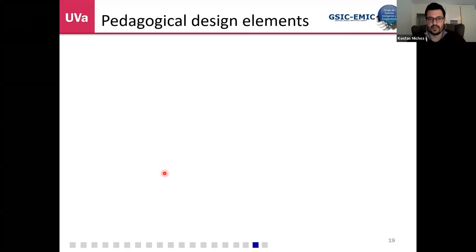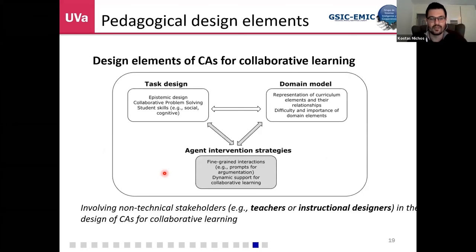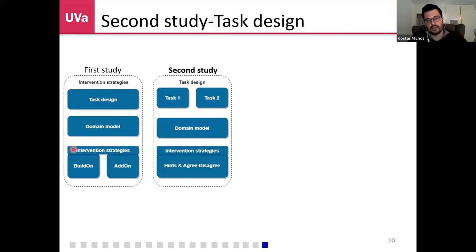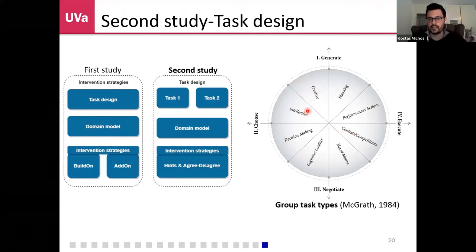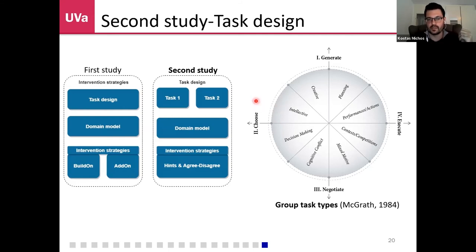We have also done a second study that focuses on task design. In the first study, we used two different intervention strategies in the same task. In the second one, we use two different tasks with the same intervention strategies — to see the influence of task type. We use the framework by McGrath, which formulates tasks based on dimensions: for example, brainstorming is a creativity task, whereas an elective task requires a unique solution to a problem, so different behaviors may emerge from students. We are currently analyzing the results from the second study.